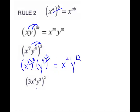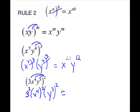For our next example, we do have a product to a power. The 2 is going to apply to each piece, so we have 3 squared, x to the 4th squared, y cubed squared. The 3 to the 2nd power we actually have to raise — this is not a power to a power, it's a number to a power — so 3 squared gives us 9. The other two are power to a power, so keep the base and multiply: 4 times 2 is 8, and 3 times 2 is 6. Be careful — if you write the steps, you won't miss it.